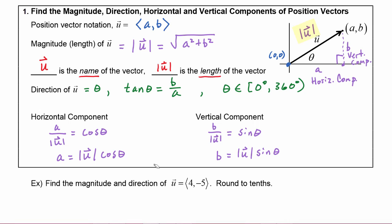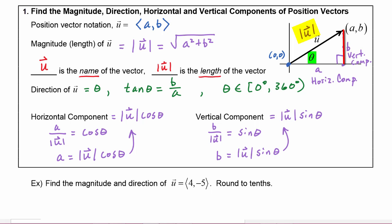When you know the magnitude of vector u and its direction theta, you can find the horizontal component by computing the magnitude of u times cosine theta, and you find the vertical component by computing the magnitude of u times sine theta.